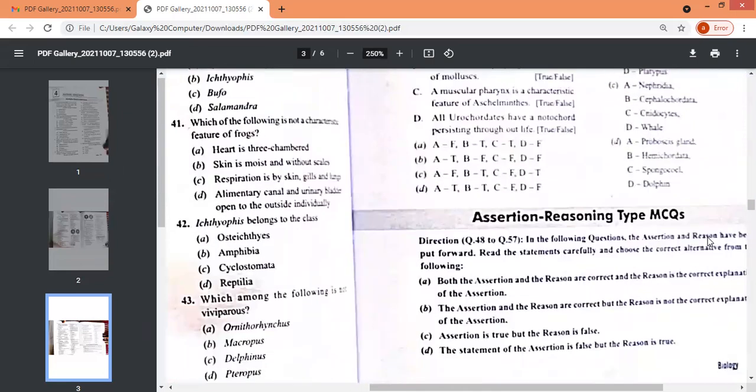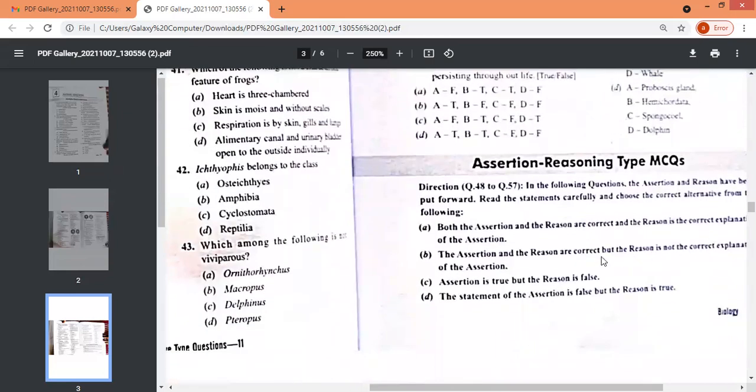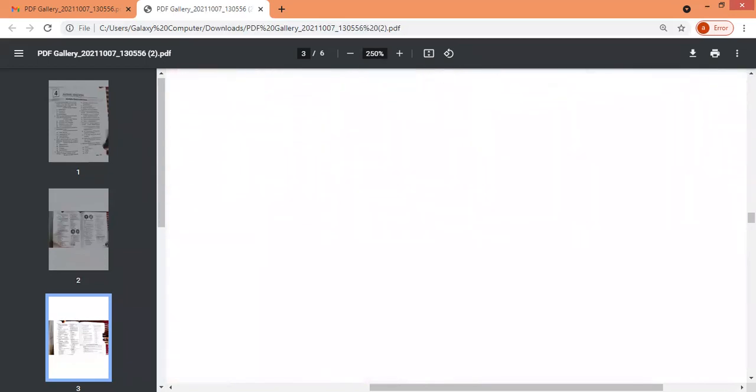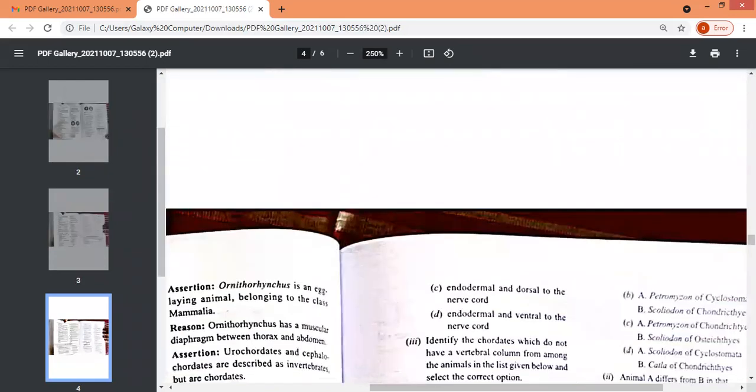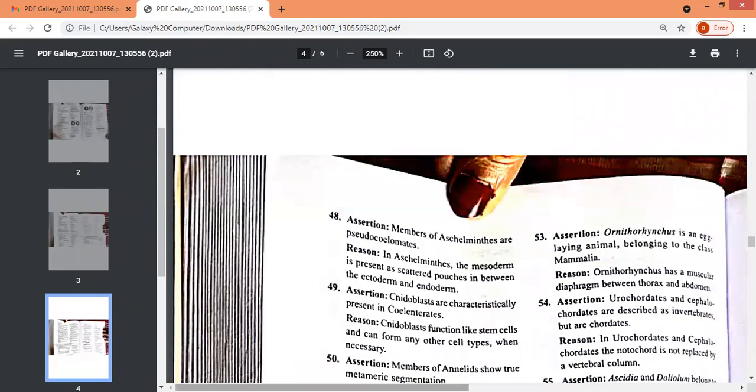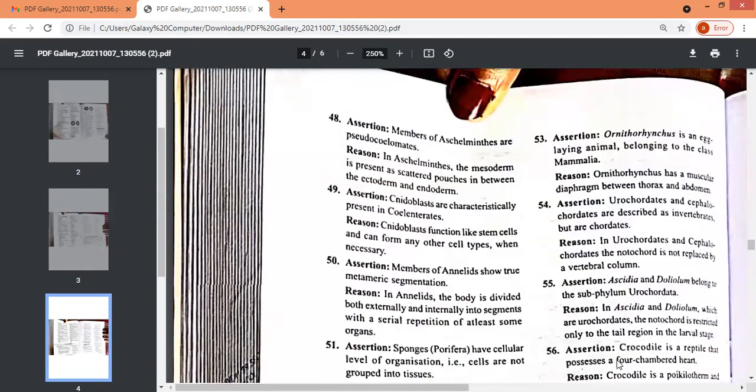Next, we come to assertion reason type questions. And these are the questions. A, B, S, U, D. These options you have to fill. And then finally, we go to...